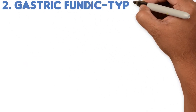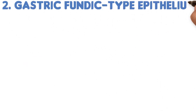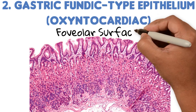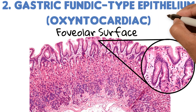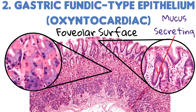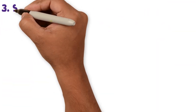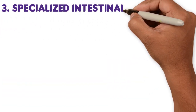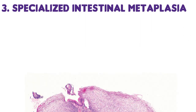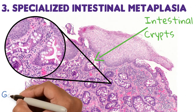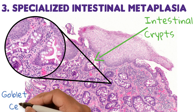Number two: the gastric fundic-type epithelium, also known as the oxyntocardiac epithelium, which has a foveolar surface as well, mucus-secreting cells, and also chief and parietal cells — it resembles the histology of the gastric fundus. Number three: specialized intestinal metaplasia, which has intestinal-type crypts lined with mucus-secreting columnar cells and has goblet cells.